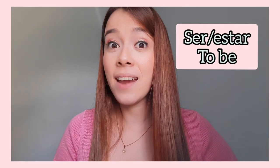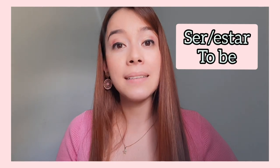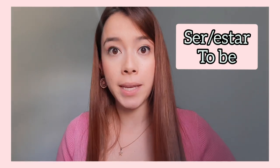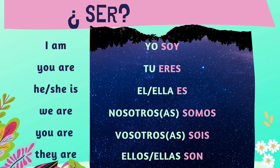Ser and estar mean the same in English: 'to be.' Let's see the conjugations for these verbs. Verbo ser: I am – yo soy. You are – tú eres. He/she is – él/ella es. We are – nosotros somos. You are (plural) – vosotros sois. They are – ellos/ellas son.